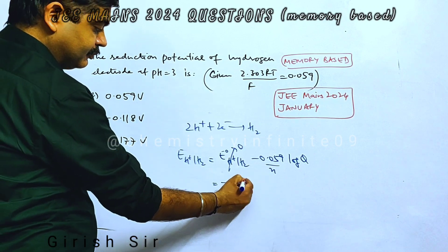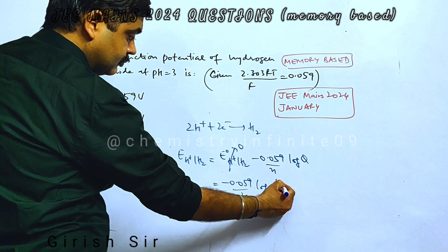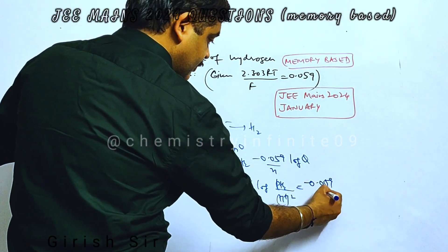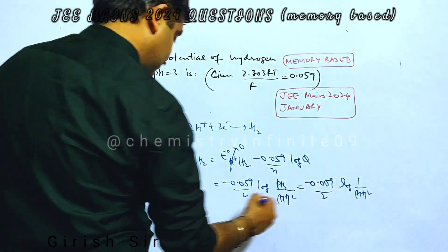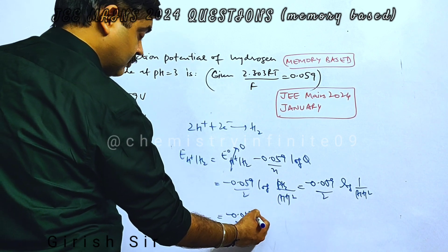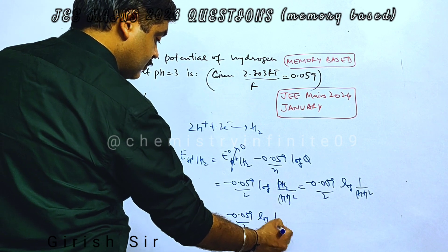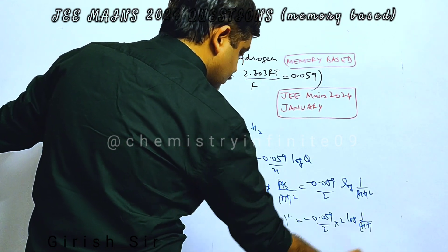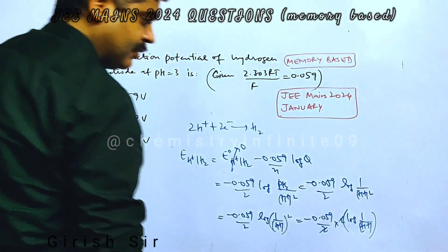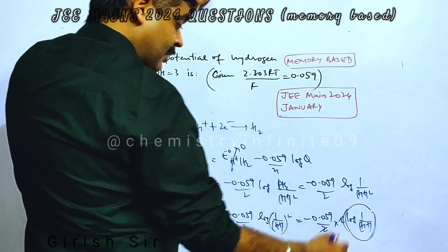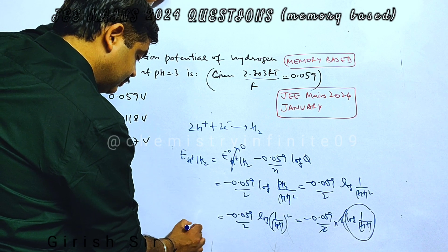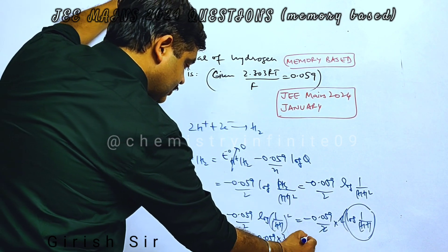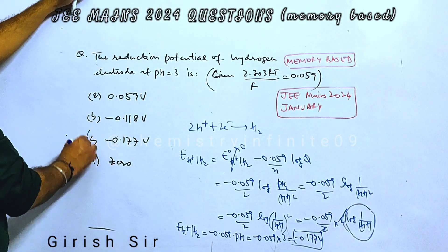Standard reduction potential of hydrogen is zero. Now assuming pressure of hydrogen gas to be one, this two cancels with this two. Log 1 by H+ can be written as pH, so reduction potential would be -0.059 into pH. The pH value given in the question is 3, that gives you -0.177V. C part is the correct choice.